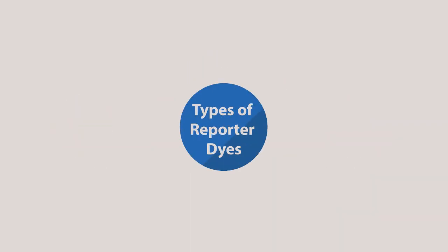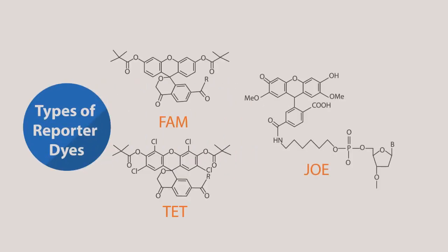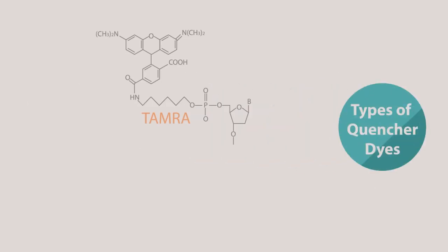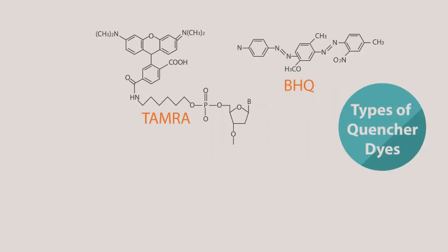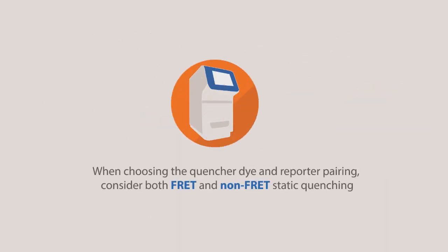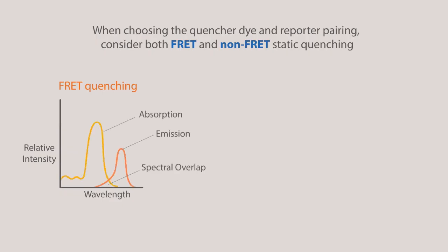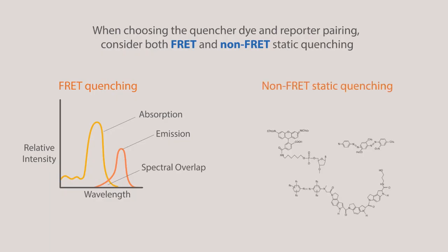There are several different types of reporter dyes in TaqMan probes, such as FAM, TET, and JOE. And there are different types of quencher dyes, such as TAMRA, BHQ, and MGB. When choosing the quencher dye that pairs with the reporter, one must consider both FRET and non-FRET static quenching. In FRET quenching, it is important for the emission spectrum of the reporter to overlap with the absorbance spectrum of the quencher. And in non-FRET static quenching, the structure of the dyes is more important.